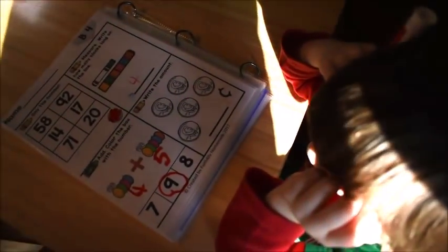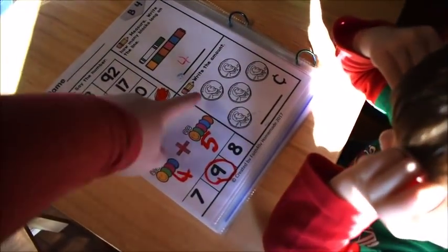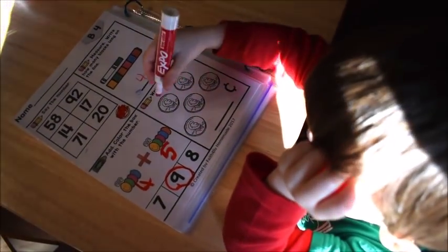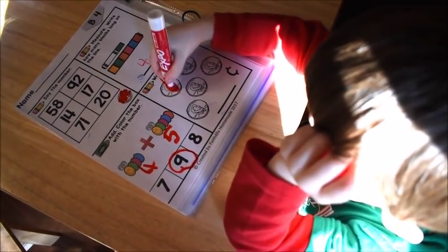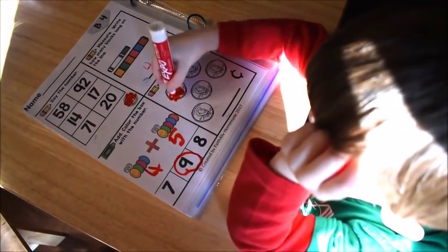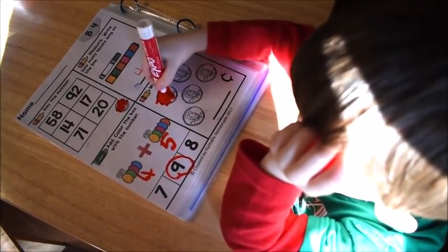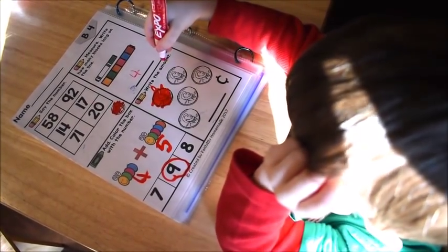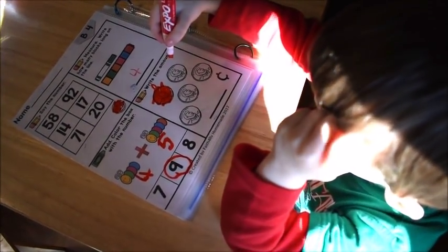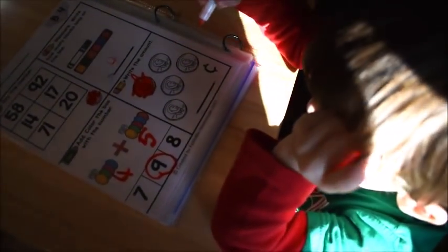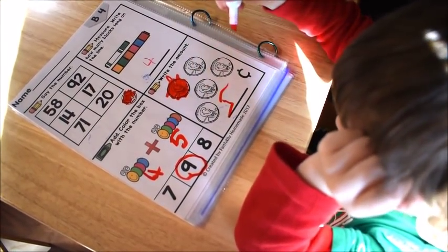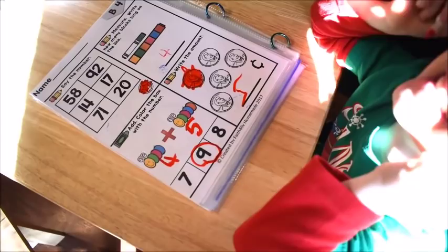All right. The last one says, write the amount. What kind of coins are these? Do you know? Yeah. Pennies. Very good. So they're worth one. So count them. How many are there? Five. Okay. So write a five. Down, around, put on a hat. Kind of. Very good.